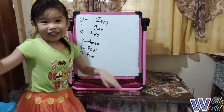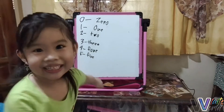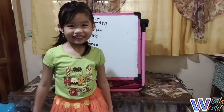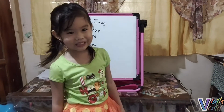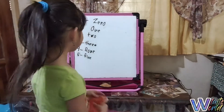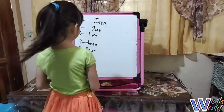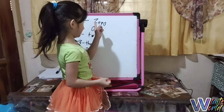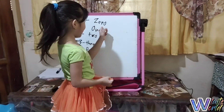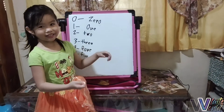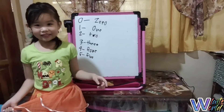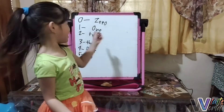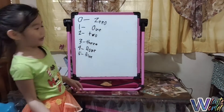You memorize it, guys. Can you say it again? The spelling of zero — can you tell them? Z-E-R-O. Zero. Zero. Very good!